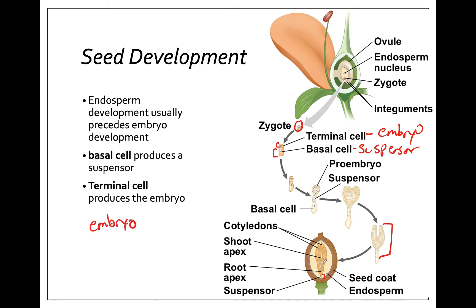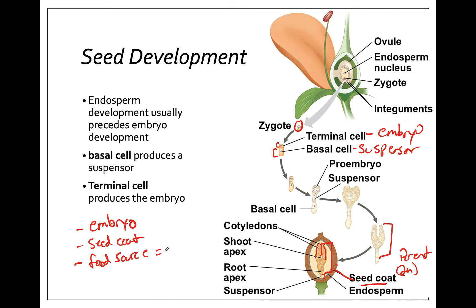A seed needs three parts: a plant embryo — this is a dicotyledon, so you can see two cotyledons here; a seed coat formed by the two integuments on the outside, which is diploid and from the female parent ovary genetics; and a food source, which is the endosperm. In most dicots the endosperm gets absorbed into the cotyledons and they swell up, while in monocots the endosperm goes through the cotyledon to reach the embryo.